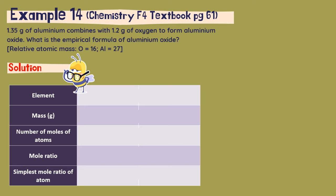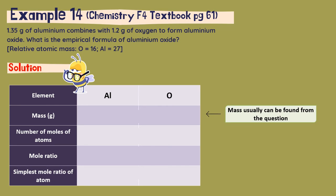In the table, put the element as the first column, followed by mass, followed by the number of moles of atoms, followed by molar ratio, and lastly the simplest molar ratio of atoms. In this question, we use aluminium and oxygen as our elements. For mass, which is usually given in the question, aluminium has a mass of 1.35 grams and oxygen has a mass of 1.2 grams.